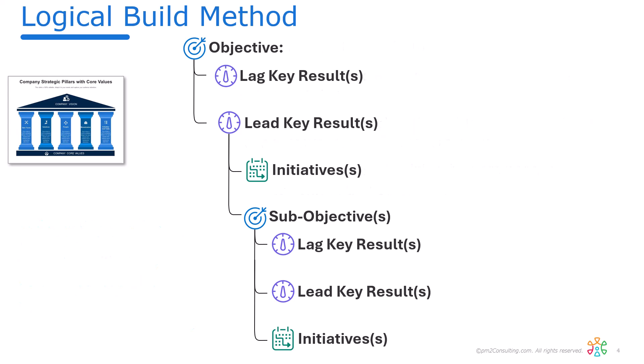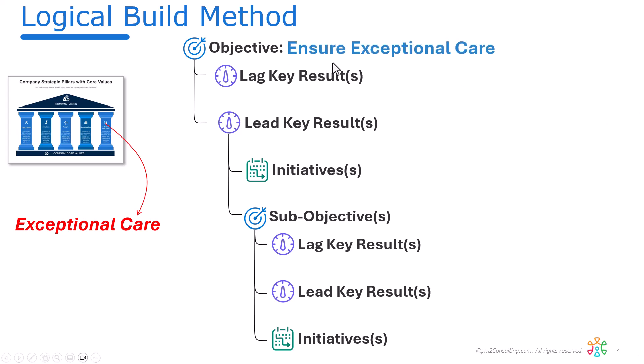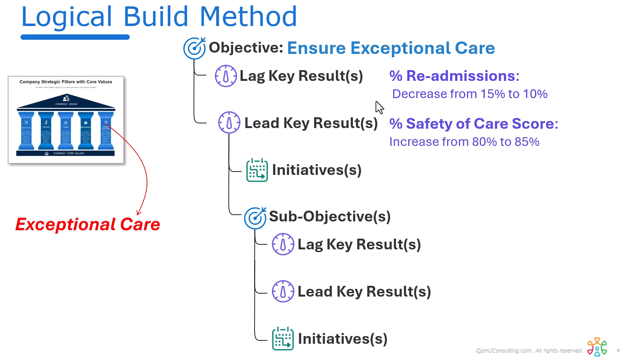Let's take a practical example from healthcare. Let's say one of those pillars is about providing exceptional care. As an objective, we write: ensure exceptional care. A lagging key result might be percentage of readmissions, and our goal is to decrease from 15% down to 10% this quarter. A leading key result would be percentage of safety of care score, and we want to increase that from 80 up to 85%.